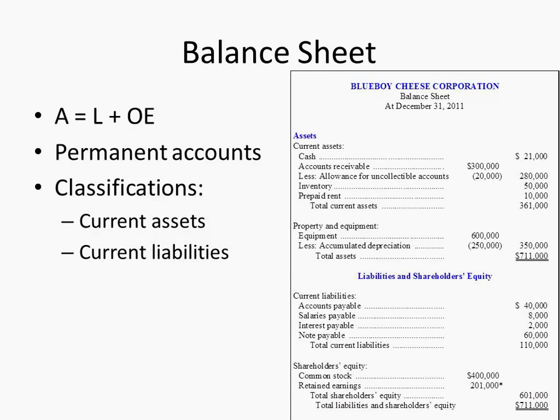Dividends come out of retained earnings — that's an important point. Another item we'll learn about later is other comprehensive income. You can have other comprehensive income or accumulated other comprehensive income in the equity section, which may incorporate items that look like they belong on the income statement but bypass it.